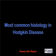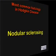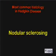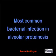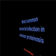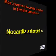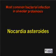What is the most common histology in Hodgkin's disease of the lung and mediastinum? Nodular sclerosing Hodgkin's disease. What is the most common bacterial infection to occur in alveolar proteinosis? Nocardia asteroides.